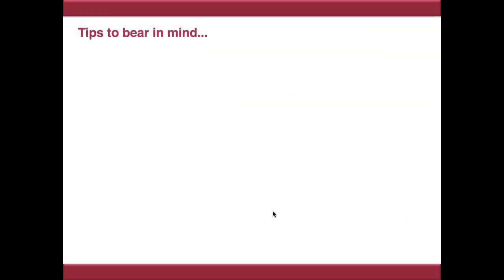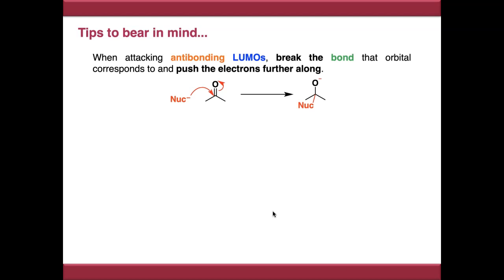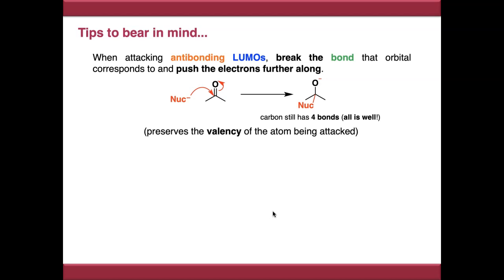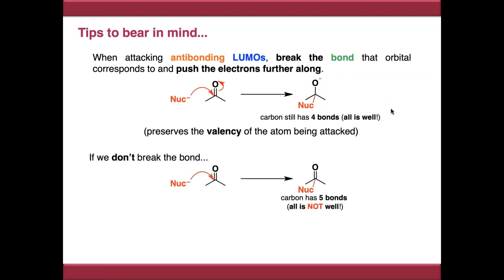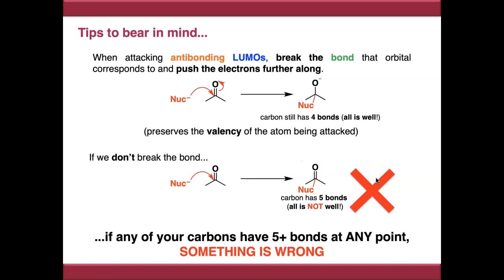A few tips to bear in mind when drawing curly arrow mechanisms. When attacking anti-bonding LUMOs, you break the bond that orbital corresponds to and push the electrons further along. This preserves the valence of the atom being attacked — carbon makes four bonds, so if a nucleophile attacks it, you must kick electrons from another bond onto the next atom to preserve the four bonds on carbon. Carbon must always be tetravalent if neutral. If you leave out that second arrow, you end up drawing five bonds to carbon — pentavalent carbon cannot appear in any of your mechanisms.